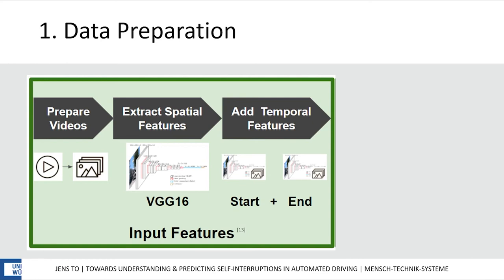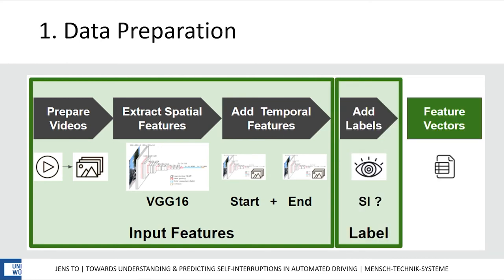I concatenated these for the first and last image of a sequence to get temporal features. Together, they should provide information about saliency and effort, which are the bottom-up factors of the visual attention model. Then I added the label from the annotation data. Whenever drivers switch their attention away from the TV show for at least 2 seconds, it is labeled as a self-interruption.